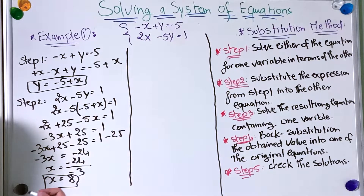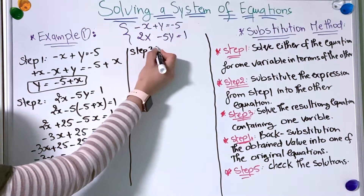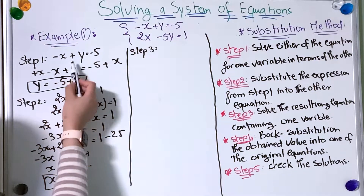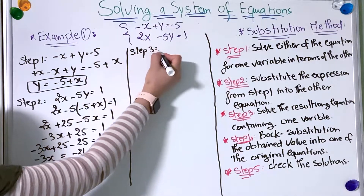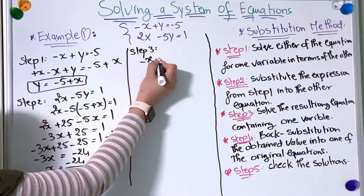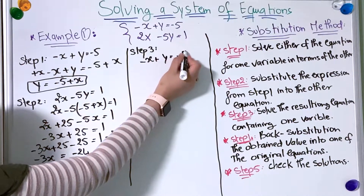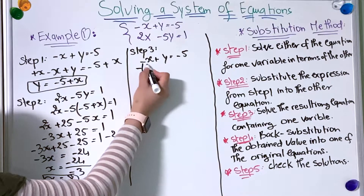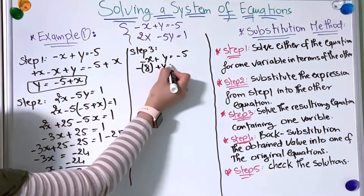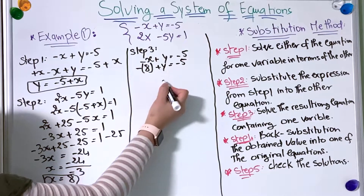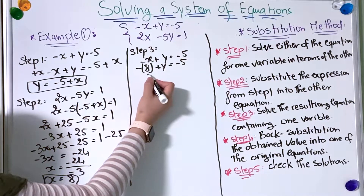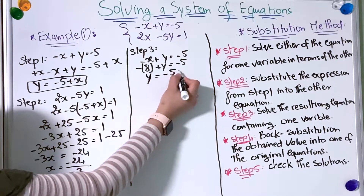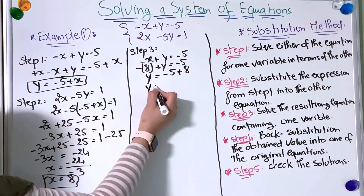Now I'm going to move to the third step. We take the solution we found and plug it into one of the equations to find y. Taking the first equation, minus x plus y equals minus 5, with x equal to 8: minus 8 plus y equals minus 5. Adding 8 to both sides, y equals minus 5 plus 8, so y equals 3.